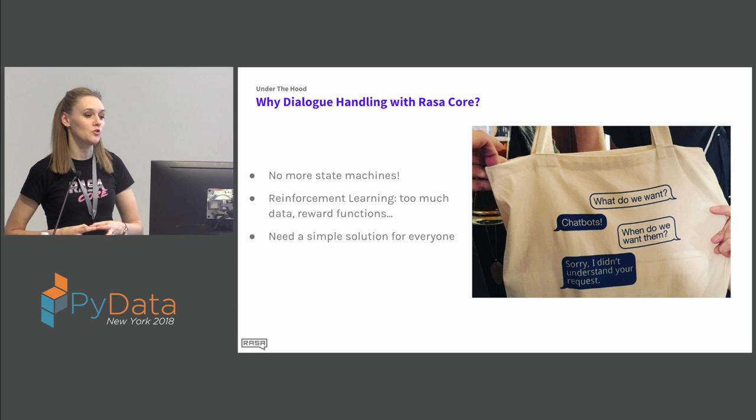Saving the code and triple-checking for typos. Before training the model, I want to show one more thing — you can visualize your training data using GraphViz. This is a good way to debug and see what's happening in your stories, so you can find conversational flows that might add noise to your training data and make your model worse rather than better. For example, you can see that in my training examples, all conversations start with a greet intent.